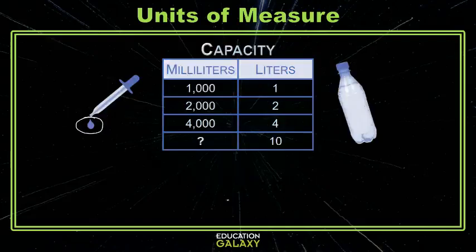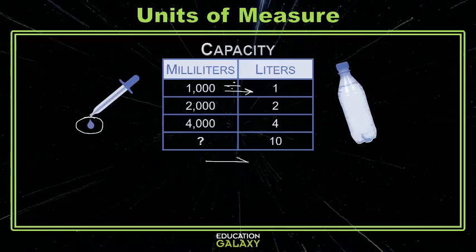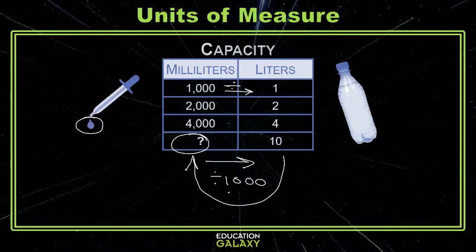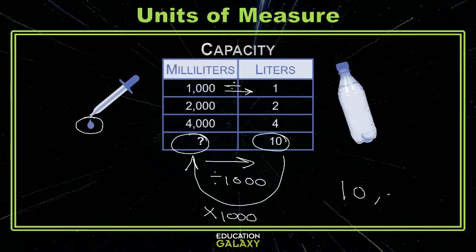Let's try one for capacity. A liter is about this water bottle here, and a milliliter is just this little drop. To get from that little drop to the liter, we need to divide. We're given that there are 1,000 milliliters in 1 liter, which means we divide by 1,000. This one's a little different — we weren't given the starting number. So we have to do the opposite: if we divide by 1,000 to get to 10, then going the other direction we multiply by 1,000, and again that is 10,000.